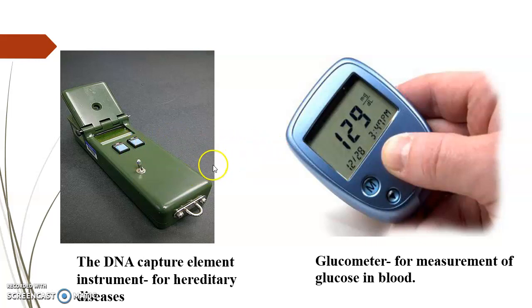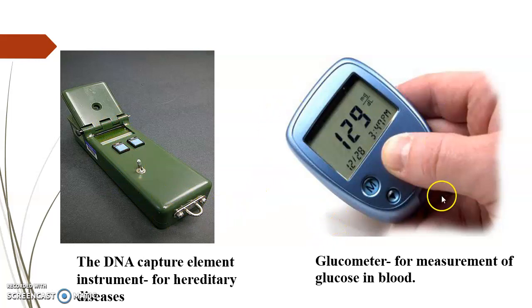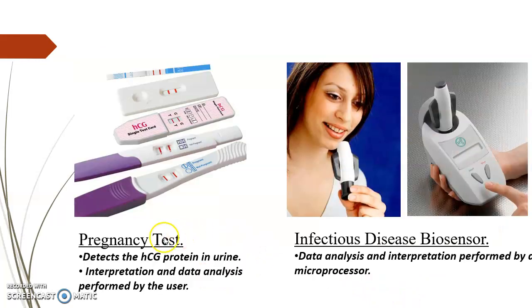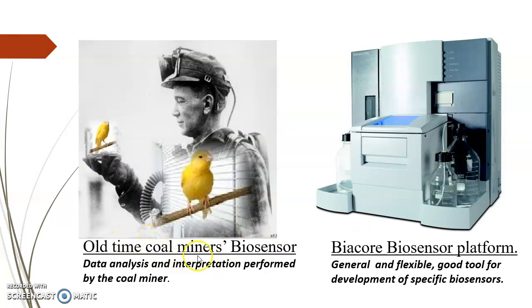If this has to be done externally, what could be done? We need to use some instruments. For example, the DNA capture element instrument for hereditary diseases is shown here. And I hope everyone must have seen this glucometer for measurement of glucose in blood. This is used for pregnancy tests, and infectious disease biosensors are shown here. In olden days, coal miners used this kind of biosensor for data analysis — this is actually a BioCore biosensor platform.